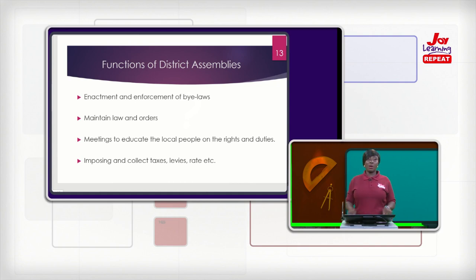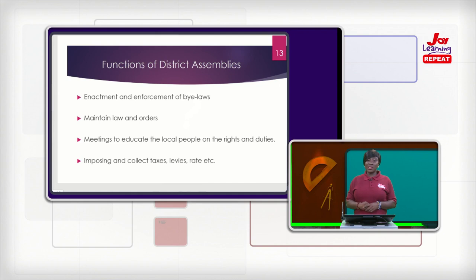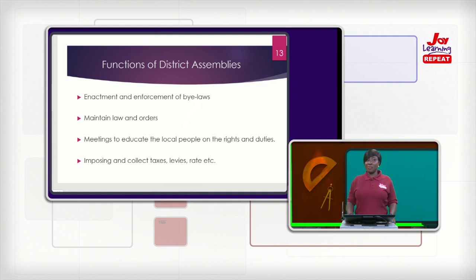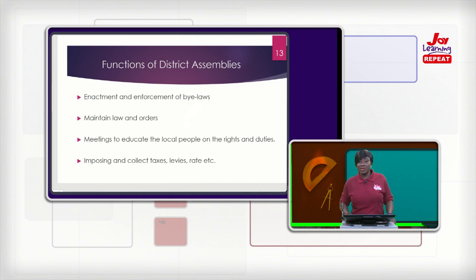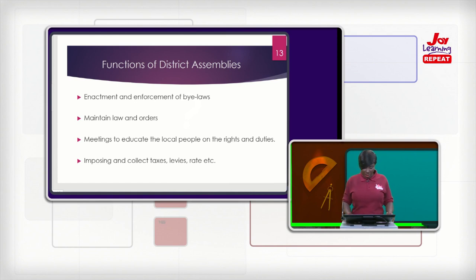They also maintain law and order. They see to it that there is law and order. When you come to Accra, you would find some areas, especially where there are traffic lights, where city guards make sure traffic is less, there is less congestion on the streets, people don't sell things at unauthorized areas, and people do not sell foods that are not wholesome for the local area. Then once in a while, there are meetings to educate the local people on their rights and duties.